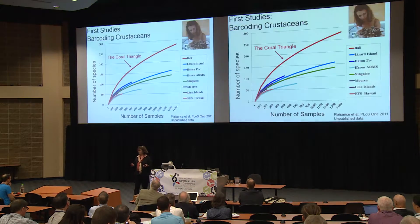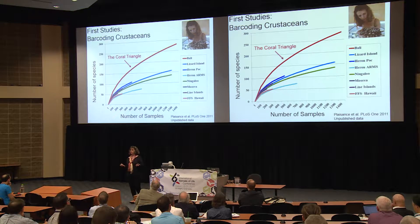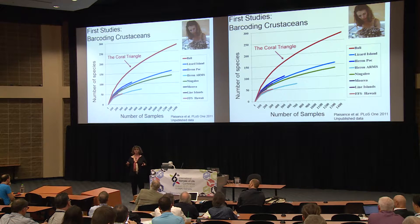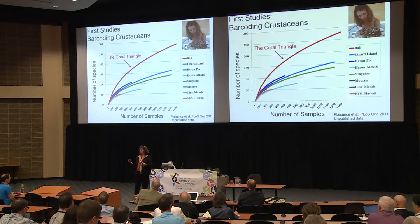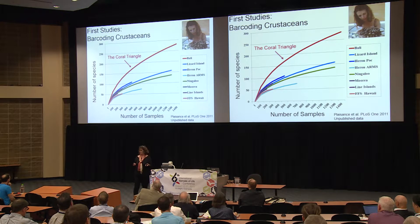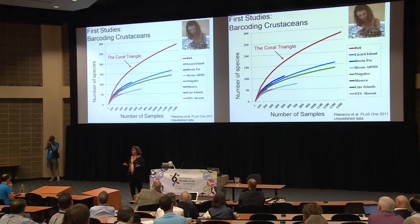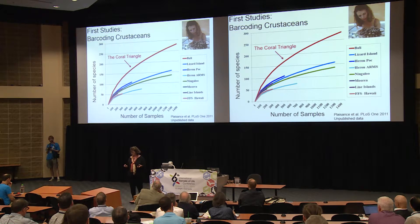I'm going to talk about three projects — briefly giving you a sense of what we've discovered during and following the census. The first was using traditional barcoding methods to census crustaceans living mostly in deadheads. This was work done by Laetitia Plaisance. The bottom line — and many of you have curves like this in your own work — is that you sample and sample and sample, and the curves show no sign of leveling off. You can also see how diverse the coral triangle is in this analysis.